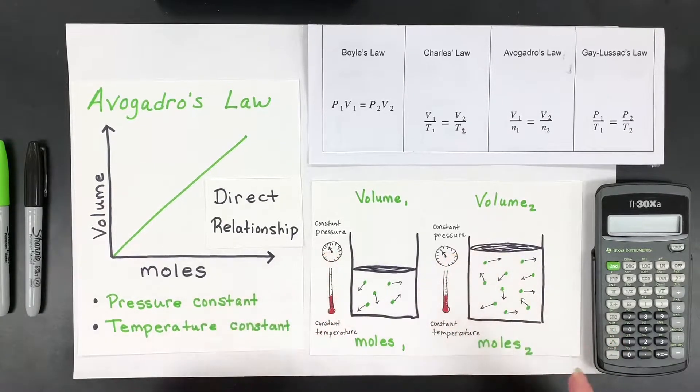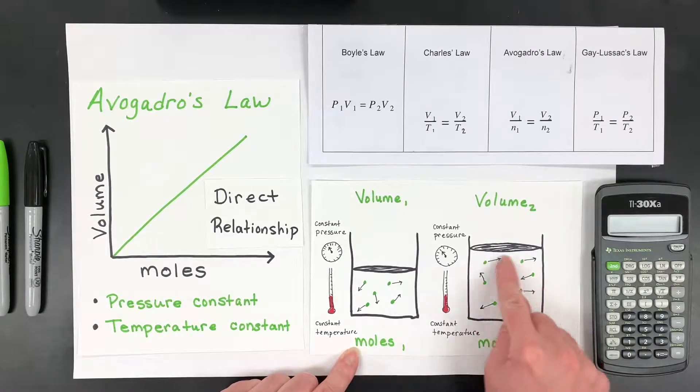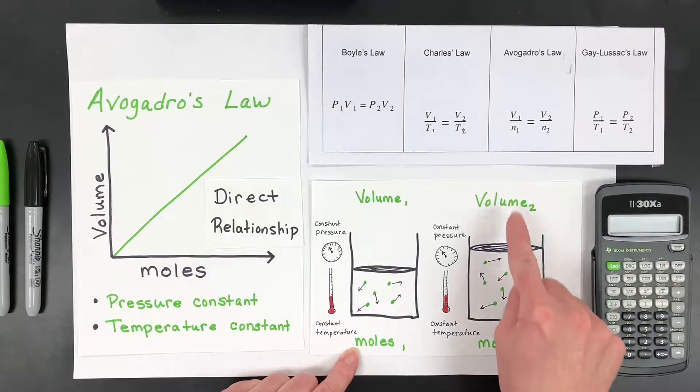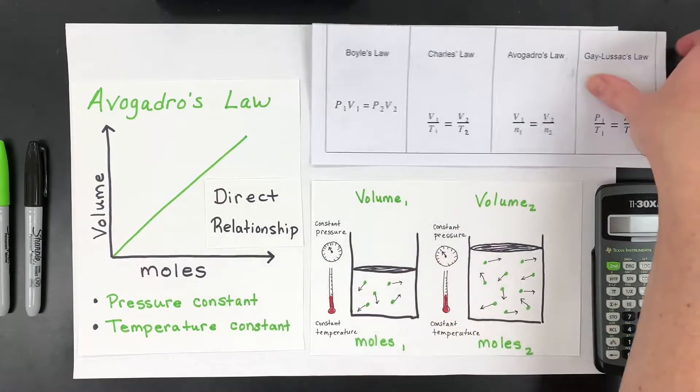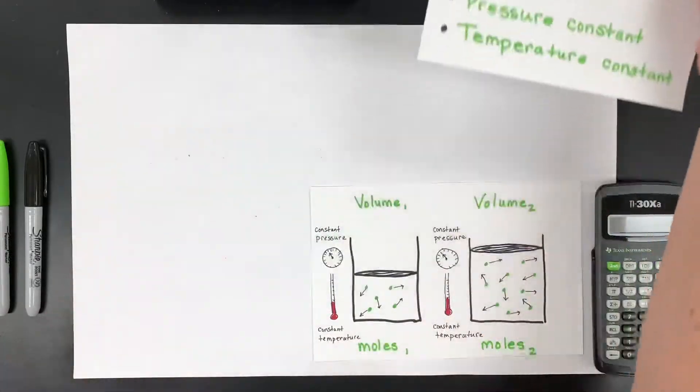We're also going to keep the pressure constant. So what's going to happen is if I have more moles of gas, to keep the pressure constant at that same temperature, the volume has to go up. So it's another direct relationship. So let me just kind of show you quickly with the model, and then we'll go on to the sample problems.